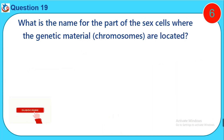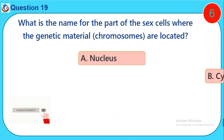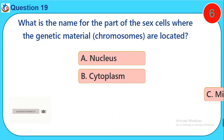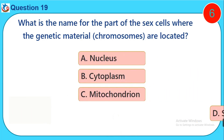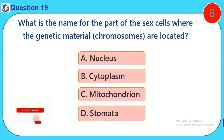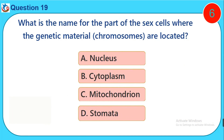Question nineteen: What is the name of the part of the sex cells where the genetic materials are located? A) Nucleus, B) Cytoplasm, C) Mitochondria, D) Stomata.